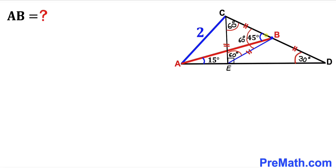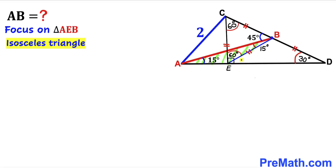Now let's make an observation. We can see that this angle is 45 degrees, so therefore this remaining small angle has got to be 15 degrees. Let's focus on triangle AEB — this is an isosceles triangle since this angle is 15 degrees and this angle is 15 degrees as well. So therefore we conclude that side length AE is going to be equal to side length EB.